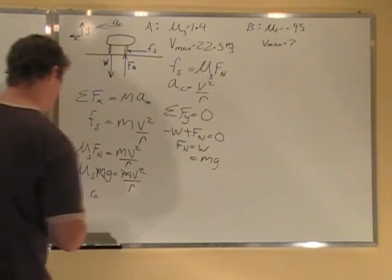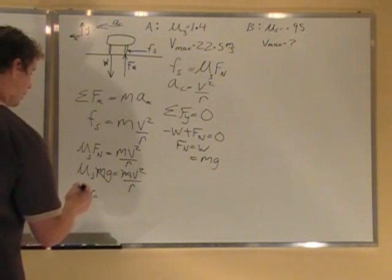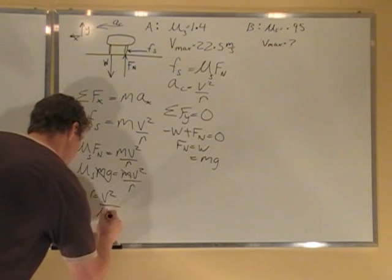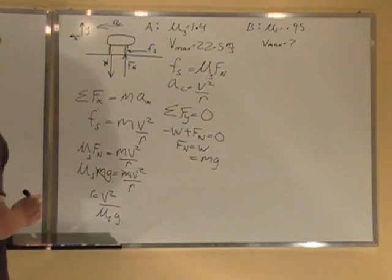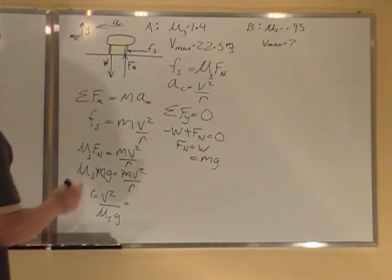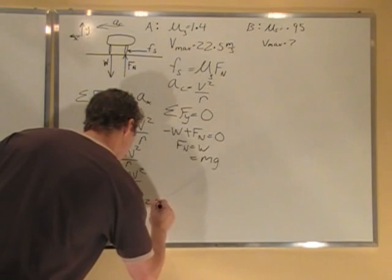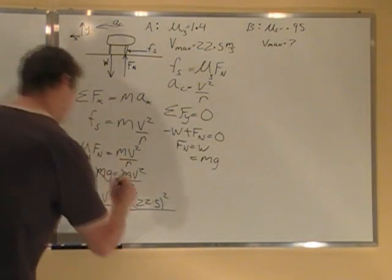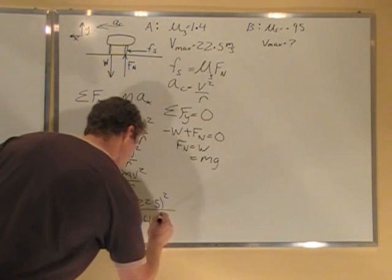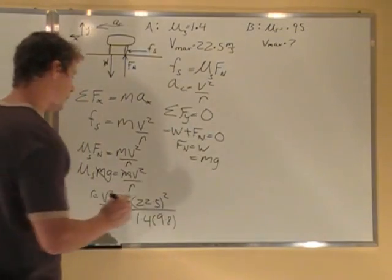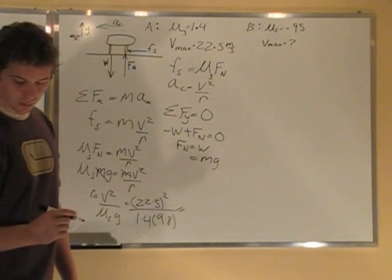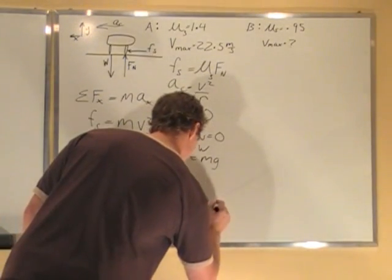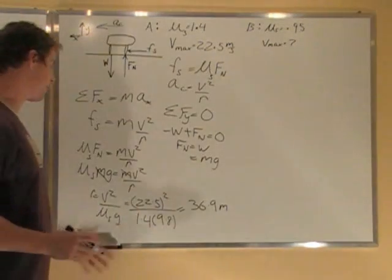If I say radius equals, multiplying the radius up, I'm left with V squared divided by mu S and G. R equals V squared over mu G. Plug my numbers in, 22.5 squared over mu times G, mu is 1.4, G is 9.8. So I find that my radius is equal to 36.9. We've figured out what the radius is.